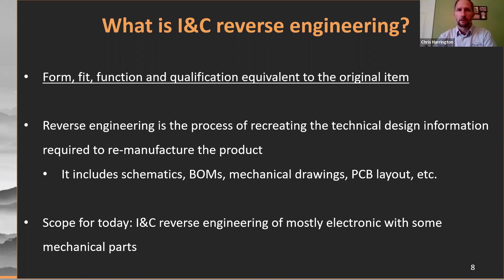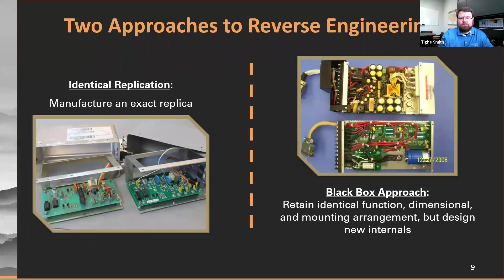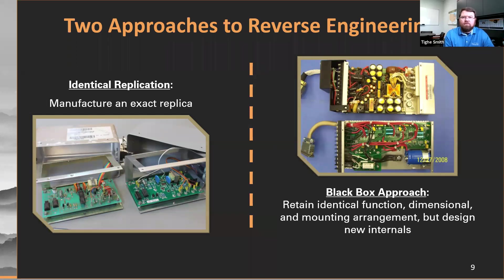We do some mechanical reverse engineering at Paragon, but that's not the scope of today's discussion — we'll cover that in another webinar in the future. Talk a little bit about the two approaches we're using for reverse engineering. What we try to do — and the goal is to make it easiest for the plant to accept the equipment — is to provide something identical to the original. We try to make an exact replica, almost remanufacture the original, so when you put them side by side there are very few visible differences.